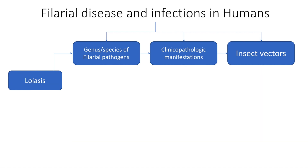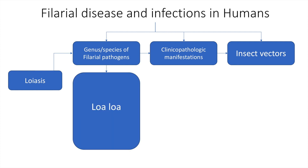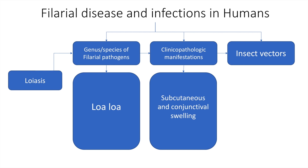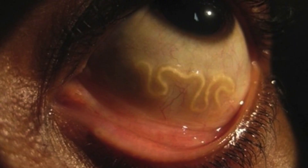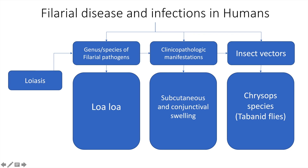If we look at loiasis, the genus is Loa loa and the clinico-pathologic manifestation is subcutaneous and conjunctival swelling. A very dramatic image of infection with Loa loa is found on the internet and it shows the worm in the subconjunctival space. The vector for Loa loa is the Chrysops species, or the tabanid flies, and they look like this.